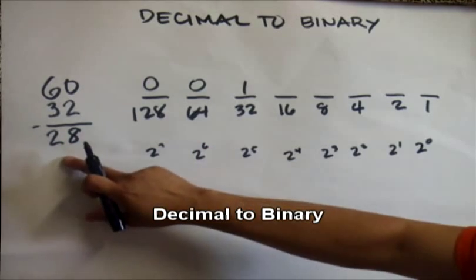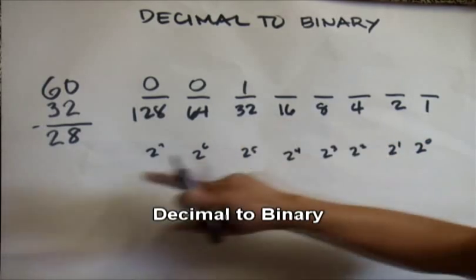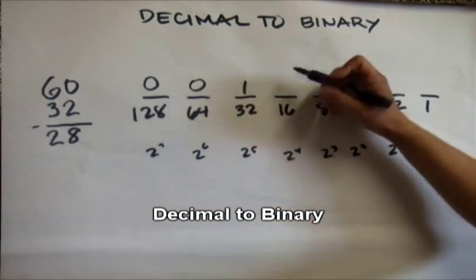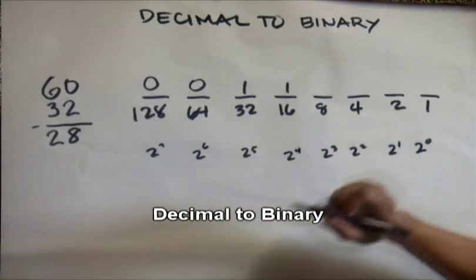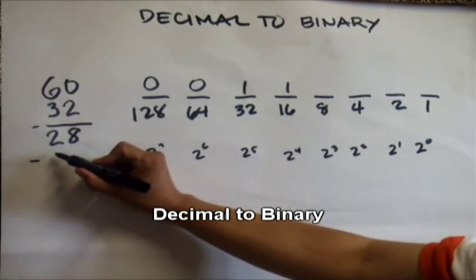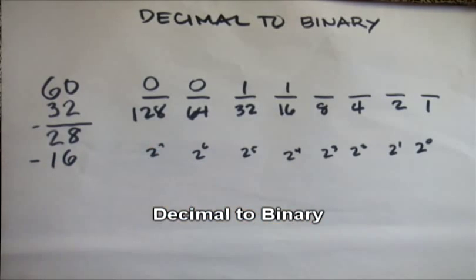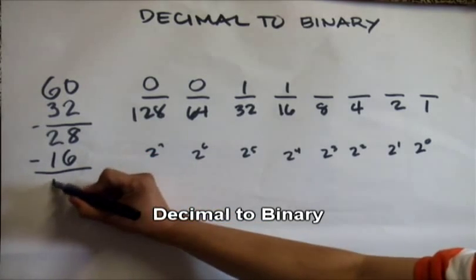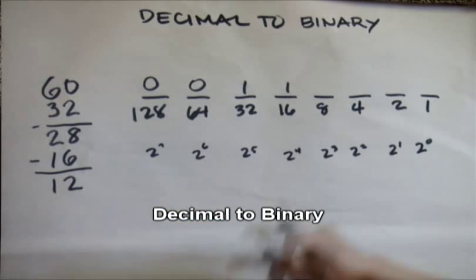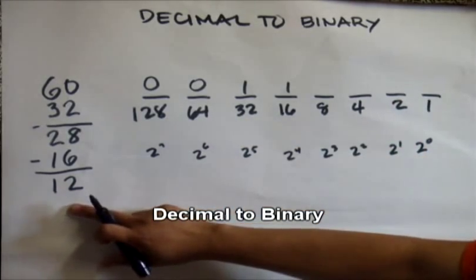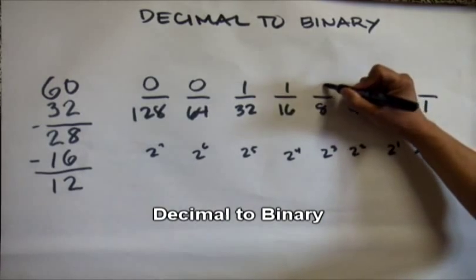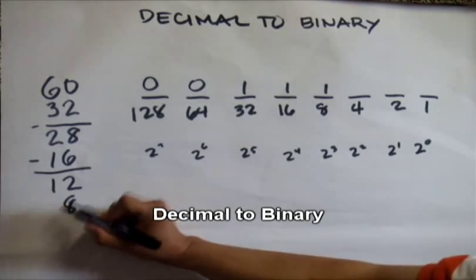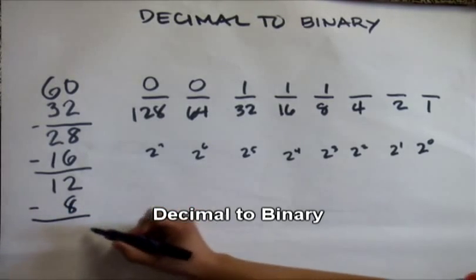Now we have 28. 16 can fit in 28, so we put one. Then we deduct 16 from 28, which equals 12. Eight can fit in 12, so we put one. We deduct 8 from 12, which is 4.